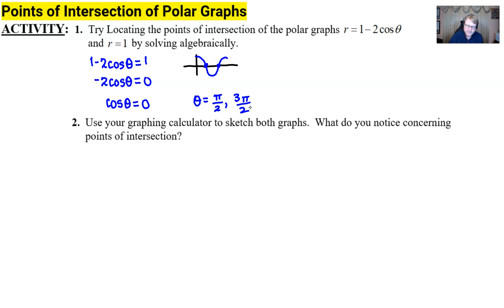So that seems to be the points of intersection. If you wanted to find true ordered pairs, the fact that r = 1 is a pretty good giveaway that you're going to use 1 for the r coordinate, and those thetas would be your theta coordinate. Keep in mind, even if you had plugged π/2 or 3π/2 in for theta in the other equation, your r would still be 1.